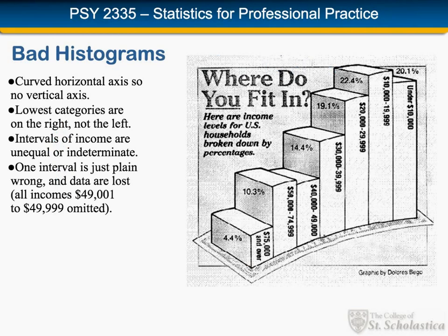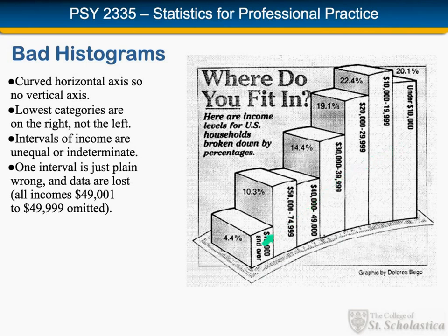Histograms are used to graph continuous data and are basically the same as a bar graph except that the bars touch each other to indicate the data are continuous. The histogram we're looking at here is a bad example — it has several problems. First, a curved horizontal axis was used, which means we can't compare the heights of the bars directly. Also, the lowest income categories are on the right, and income increases as we move to the left — the order should be the other way around.